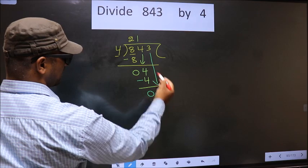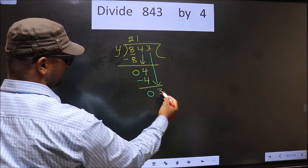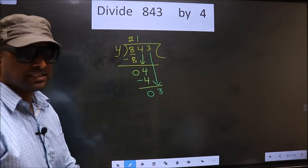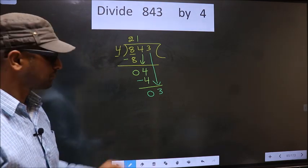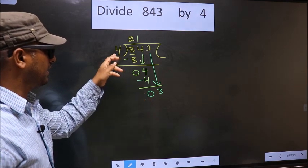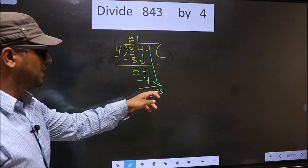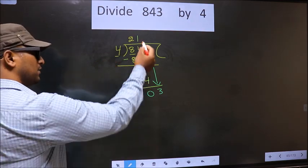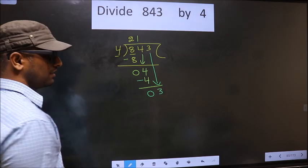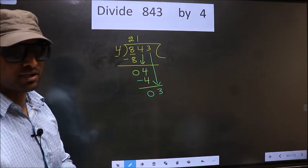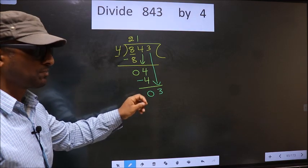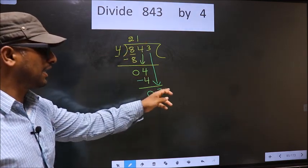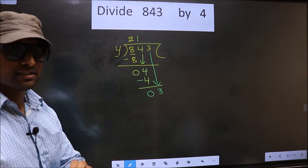Now, you bring down the beside number. So, 3 down. This is where the mistake happens. Here we have 3, here 4. 3 is smaller than 4. What many do is they put a dot and take 0 here, which is wrong. Just now you brought the number down, and in the same step you want to put a dot and take 0 here, which is wrong.